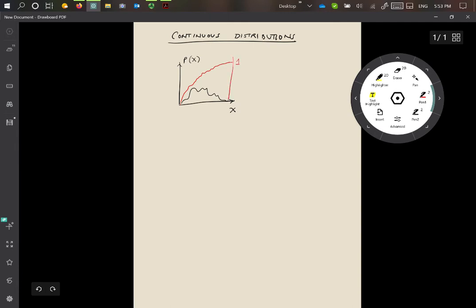And so the y-axis, so this function is called f of x, and so p of x is the probability density function, whereas f of x is the cumulative density function.